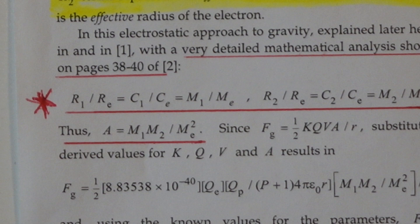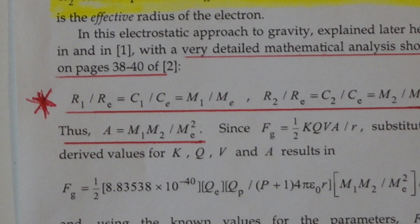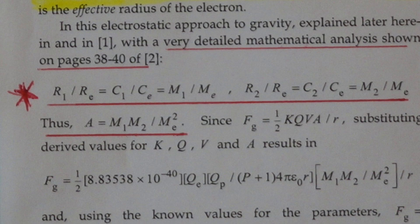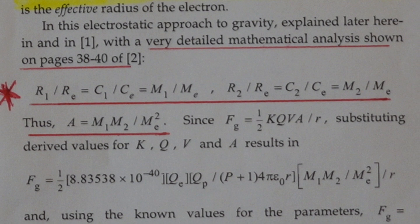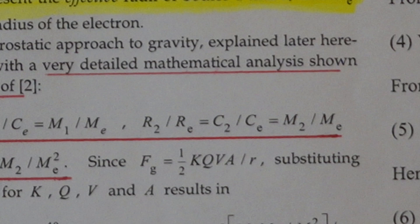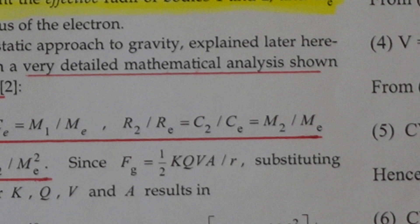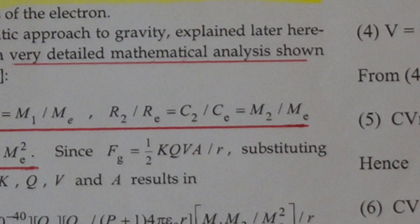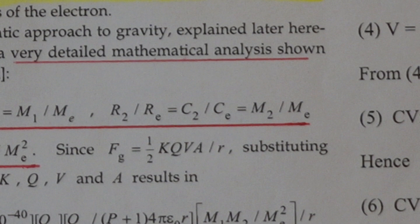Second error. Here we've got these ratios — you need to look at these critically. He's going at the ratio of body one to the radius of an electron is to the capacitance of that body to the electron as the mass of that body is to the mass of the electron. And then the ratio of the radius of body sphere number two — a general mass — is to the radius of an electron as the capacitance of that body is to the capacitance of the electron as the mass of that body is to the mass of the electron.